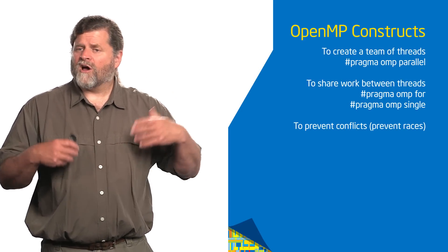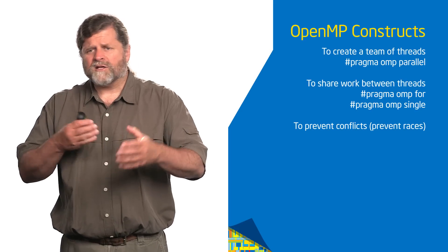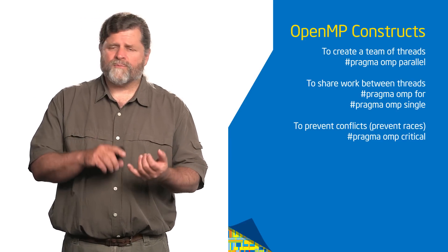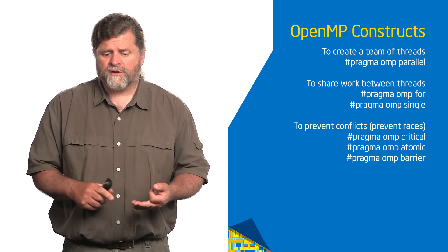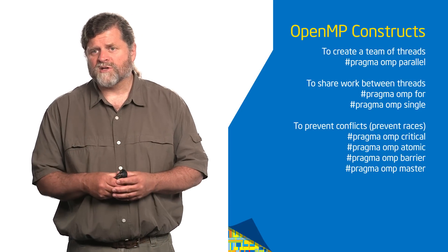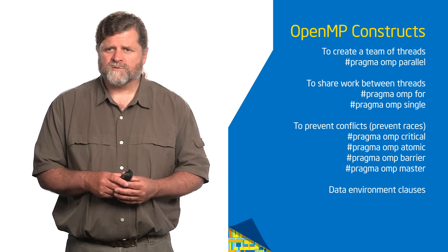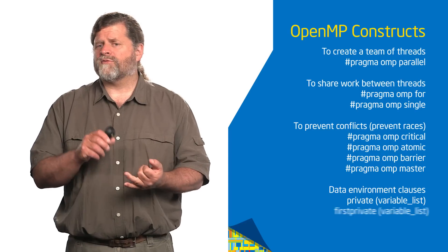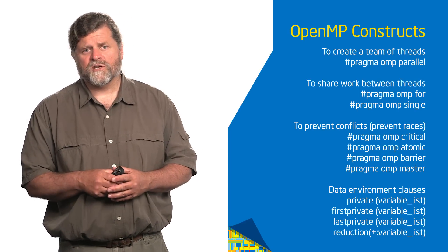We've talked about how to prevent conflicts — basically race conditions — how to control access to code and data. That's #pragma omp critical, atomic, barriers, and even the master construct. And then we've also gone through the data environment clauses, which are darn handy: private, firstprivate, and lastprivate.